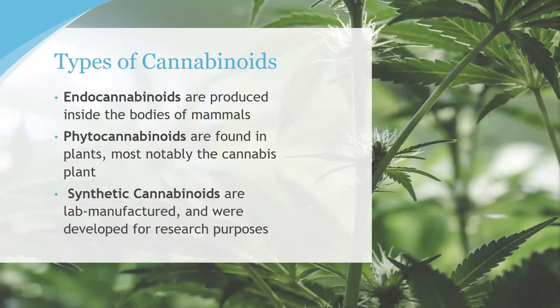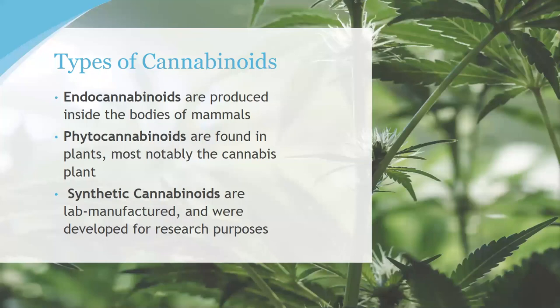Synthetic cannabinoids are compounds that have been created in a lab, often based on the THC molecule. They were developed largely for research purposes, given that prohibition prevented researchers' access. A common synthetic is a drug called Nabilone, prescribed since the mid-1980s to combat nausea, as an appetite stimulant, and to help with pain. One key takeaway is that it is quite remarkable to discover the human body has evolved with a pre-existing system to facilitate cannabinoid creation, regulation, and interaction, while among 400,000 species of plants, mainly the cannabis plant produces these specialized molecules.